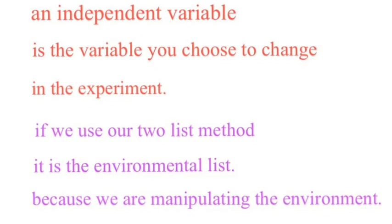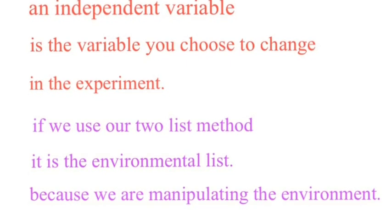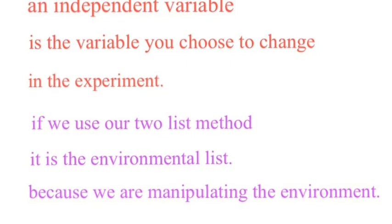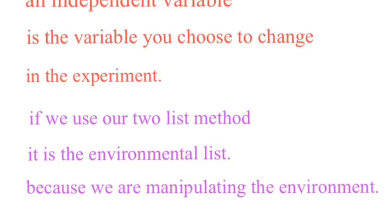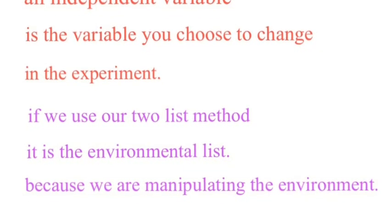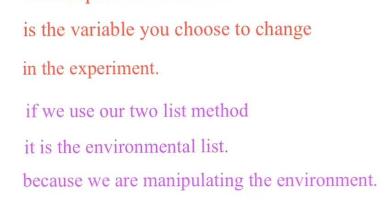we had one list was all the things that could change in the environment, and we had another list that were all the things that could change with the subject itself. The environment list is the independent variable list. And whichever one you choose, that's your independent variable. And you remember, you only choose one.